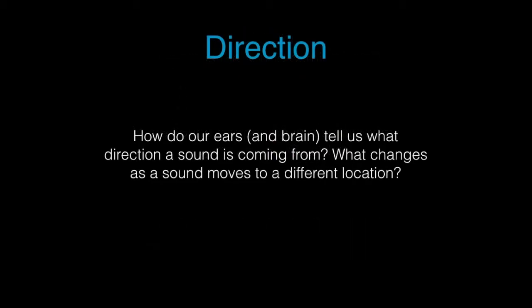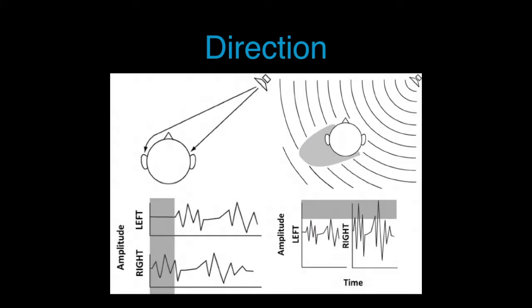To dig in a bit, how do we understand direction? How do we know that a sound is coming from our left, or our right, or up and down? Well, through the benefit of having two ears, we have both the time difference between when a sound reaches those two ears, and there's an amplitude difference between those two ears.